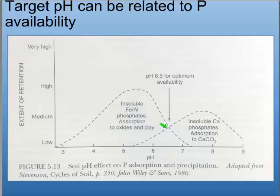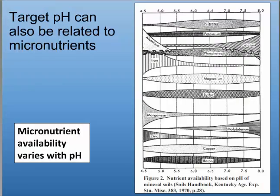You can also relate target pH to phosphorus availability. In some soils, you can maximize phosphorus availability by maintaining a pH of about 6.5. When you drop below 6.5, iron and aluminum dissolved in the soil create phosphates that plant roots can't pick up. When pH goes above 6.5, calcium in the soil can also tie up phosphorus. So pH 6.5 is the sweet spot to maximize phosphorus availability, especially if your soil phosphorus levels are below 50 parts per million.